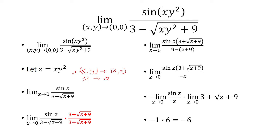The limit as z approaches 0 of sine of z over z is 1, and the limit of 3 plus the square root of z plus 9 is 6. Multiplying those two, we get our final answer as negative 6.